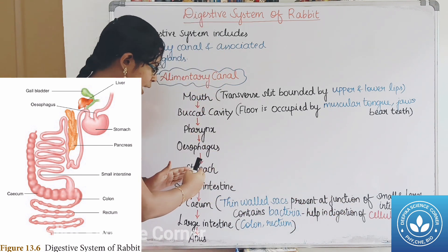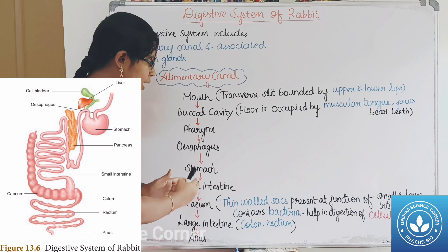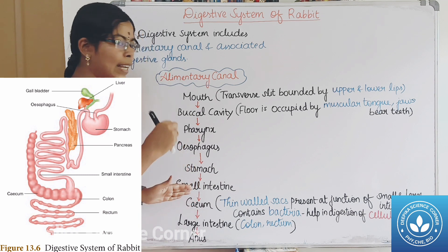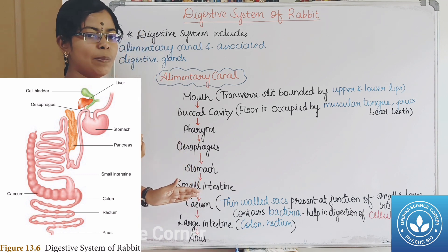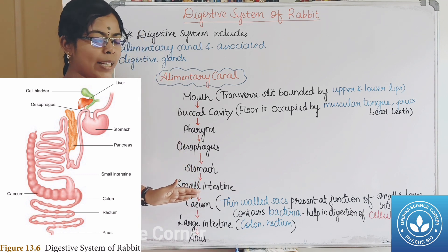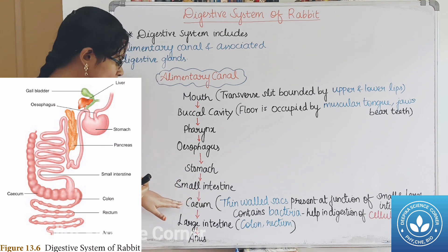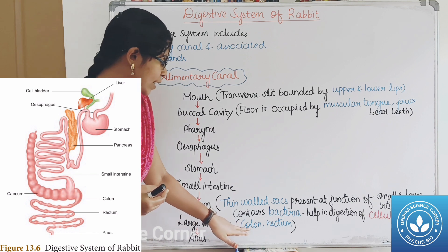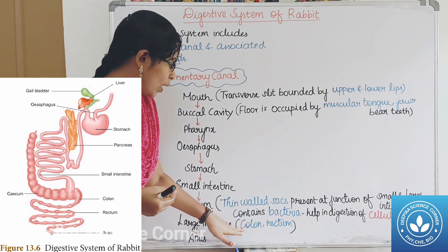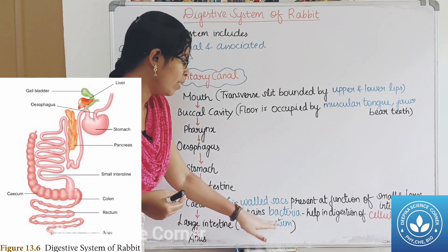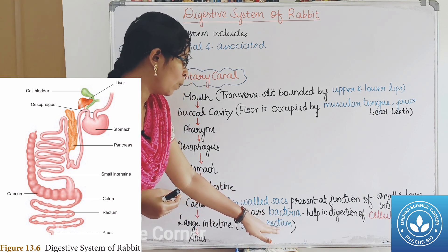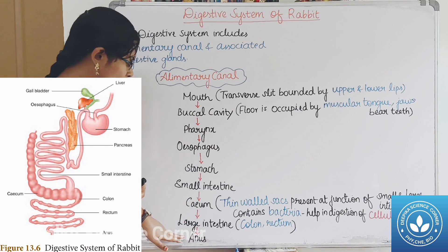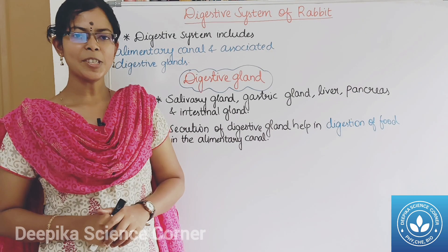If there are undigested food particles, the cecum will digest them. Next after the cecum is the large intestine. The large intestine contains the colon and rectum, and the rectum finally opens outside through the anus.